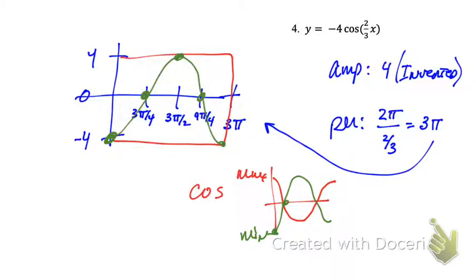So all we do here, because of that negative 4, start at the minimum to the intercept, to the max, intercept, minimum. Bingo, there we go.